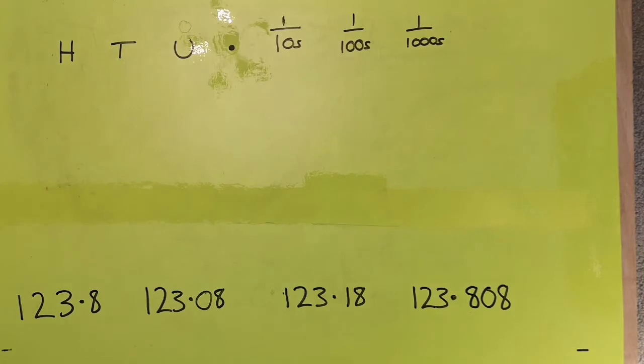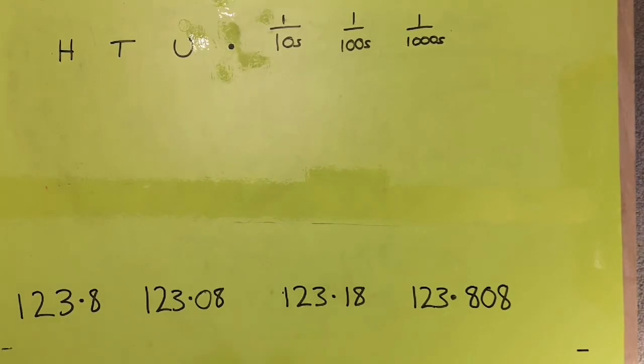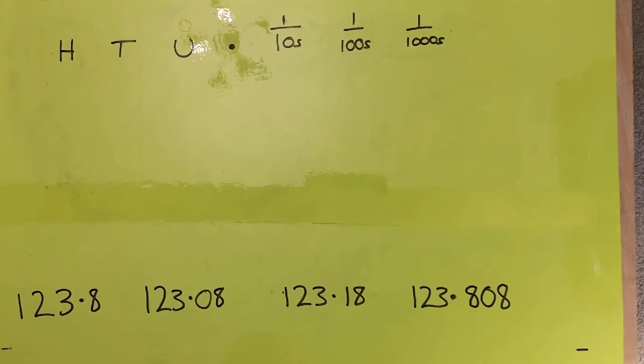So this part of the lesson, guys, we're going to have a look at ordering these four numbers. So we've got 123.8, 123.08, 123.18 and then 123.808. So we're going to have a go at putting those in ascending order. So that is from smallest to largest.